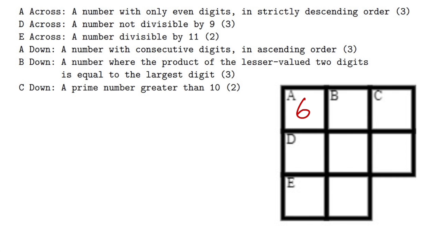Now let's take a look at C down. It says it's a prime number greater than 10. Can I put 4 here? No, not possible because I have to make sure this number is in descending order. So thanks to C down, I know this right here must be 2, and then that means this right here must be 4.